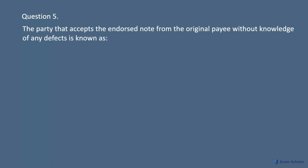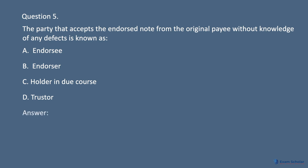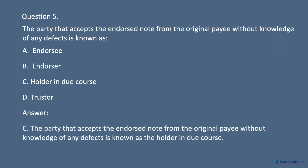Question 5. The party that accepts the endorsed note from the original payee without knowledge of any defects is known as: Answer: C. The party that accepts the endorsed note from the original payee without knowledge of any defects is known as the holder-in-due course.